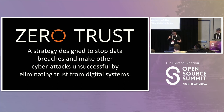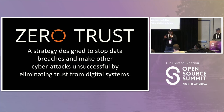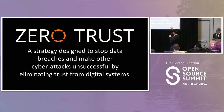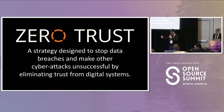Zero Trust can make cyber attacks unsuccessful by eliminating trust from digital systems. There are two kinds of cyber attacks: successful and unsuccessful. You cannot stop the attack from starting, but you can make it unsuccessful. In our practice last year, we had our first successful ransomware attack. We'd stopped thousands upon thousands of ransomware attacks before that — because you can make the attack unsuccessful, and that's what you're trying to do with zero trust.